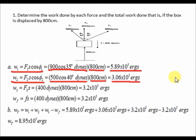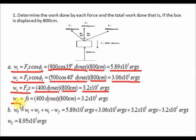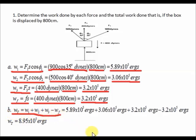For the work done by F3, the formula is W₃ = F3·S, which equals 3.2 × 10⁵ ergs. And lastly, for the work done by the frictional force F, the formula is W_F = F·S, which equals 400 dynes multiplied by 800 centimeters, giving an answer of 3.2 × 10⁵ ergs. Now to calculate the total work, the formula is W_T = W₁ + W₂ + W₃ − W_F. We subtract the work done by the frictional force because it acts only while the three forces are pulling the box and also F is in the opposite direction.